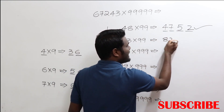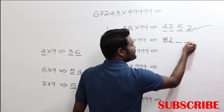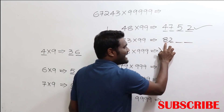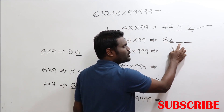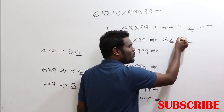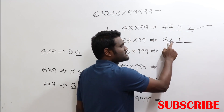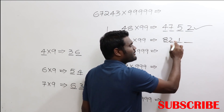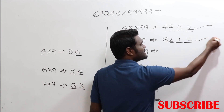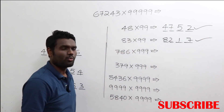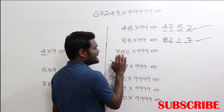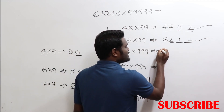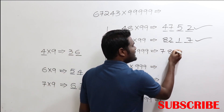Now 83 times 99. Do one less: 83 minus 1 is 82. You need two more digits. For 8, how much more to get 9? Add 1. For 2, how much more to get 9? Add 7. So the answer is 8217.